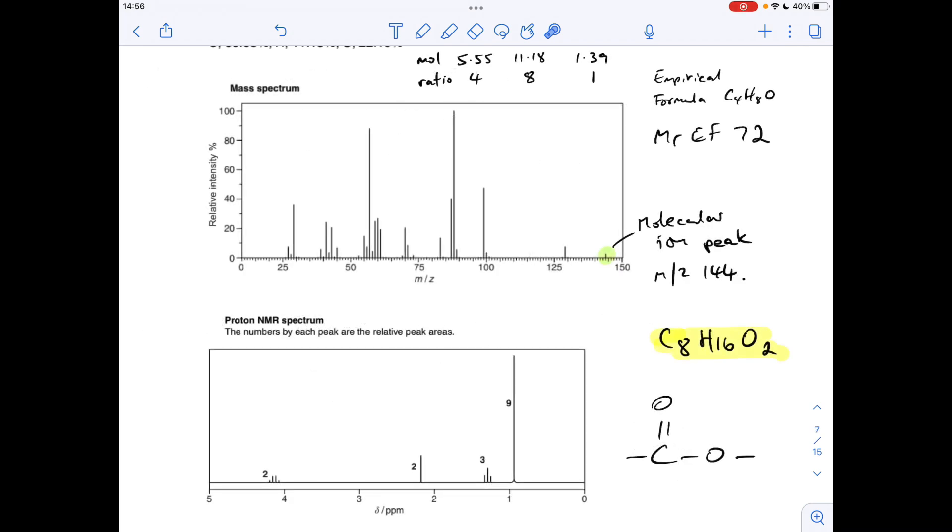OK, so moving on to this final signal now, this one at 0.9 ppm. So it's a singlet. So there are no adjacent hydrogens. It's got an area of 9. Now there's no such thing as CH9. So what this is, is three equivalent CH3 or methyl groups off the same carbon. And the shift value, HCR again.